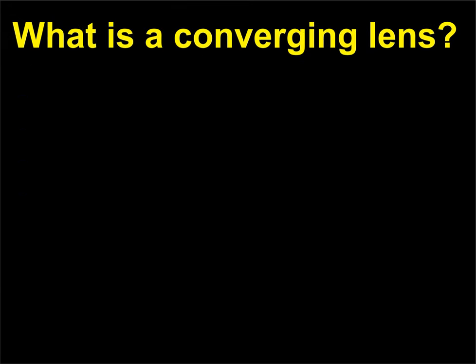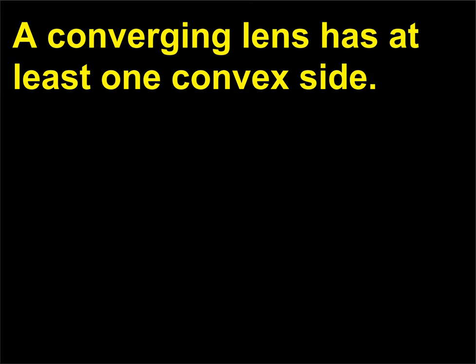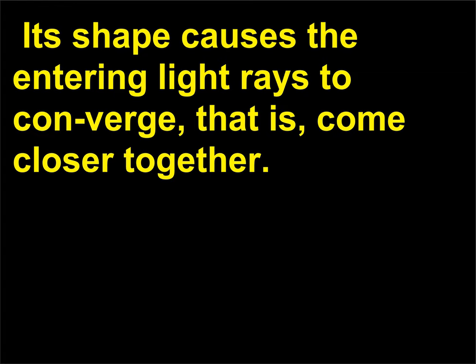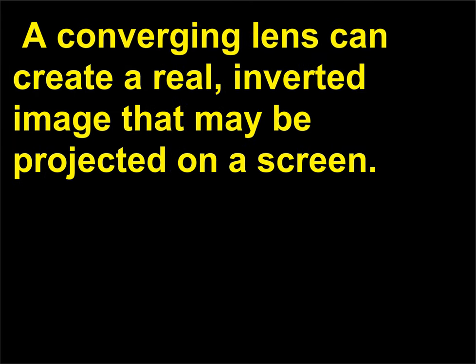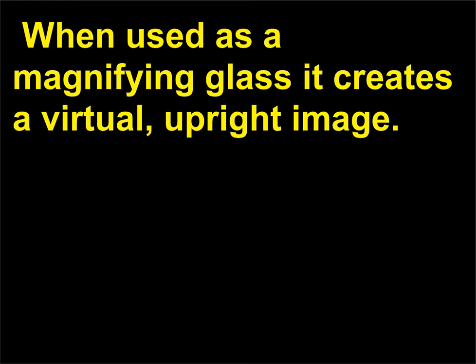What is a converging lens? A converging lens has at least one convex side. Its shape causes the entering light rays to converge, that is, come closer together. A converging lens can create a real, inverted image that may be projected on a screen. When used as a magnifying glass it creates a virtual, upright image.